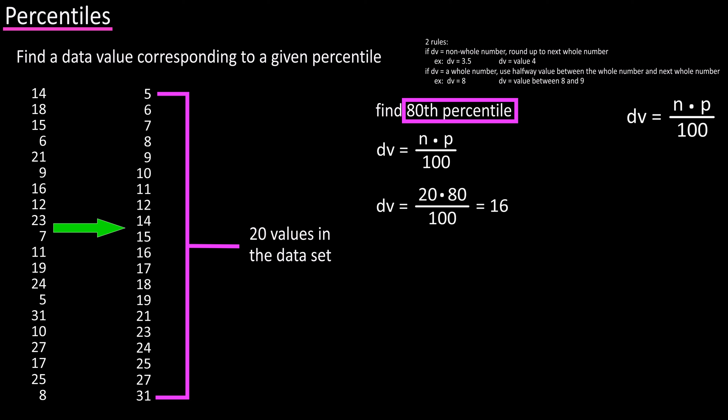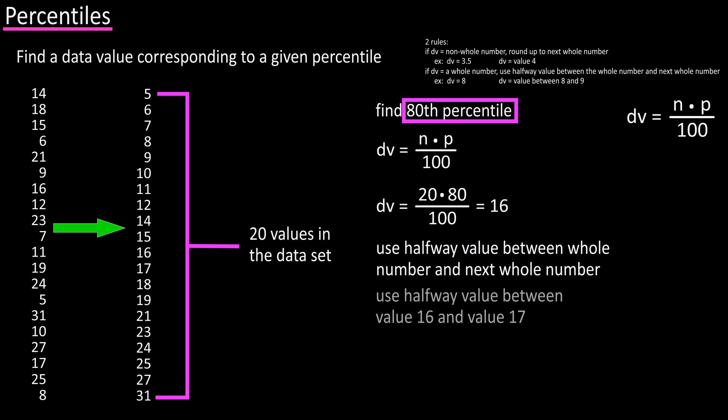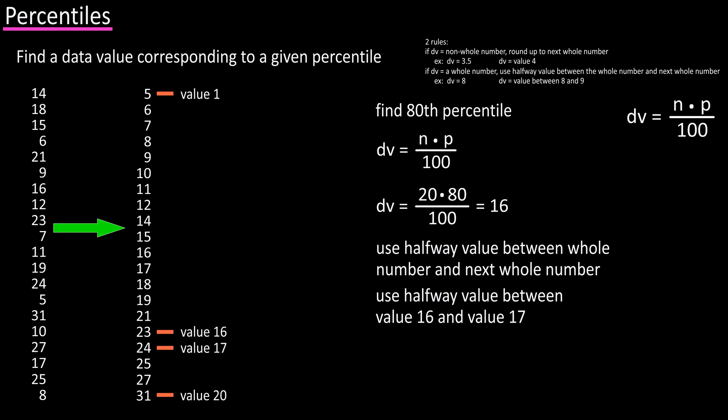And we get a result of 16. Since 16 is a whole number, we need to use the halfway value between the resulting whole number and the next whole number. So, 16 and 17. We find the 16th value in the data set, which is 23, and the 17th value in the data set, which is 24.